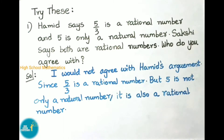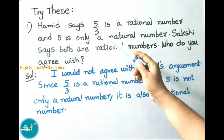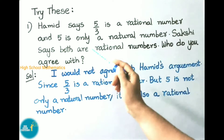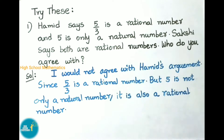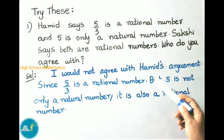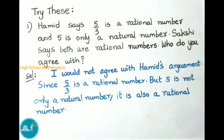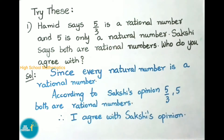Now try this: Hamid says 5/3 is a rational number and 5 is only a natural number. Sakshi says both are rational numbers. Who do you agree with? The solution is: I would not agree with Hamid's argument, because 5/3 is a rational number and 5 is not only a natural number — it is also a rational number. So we agree with Sakshi. Since every natural number is a rational number, both 5/3 and 5 are rational numbers.